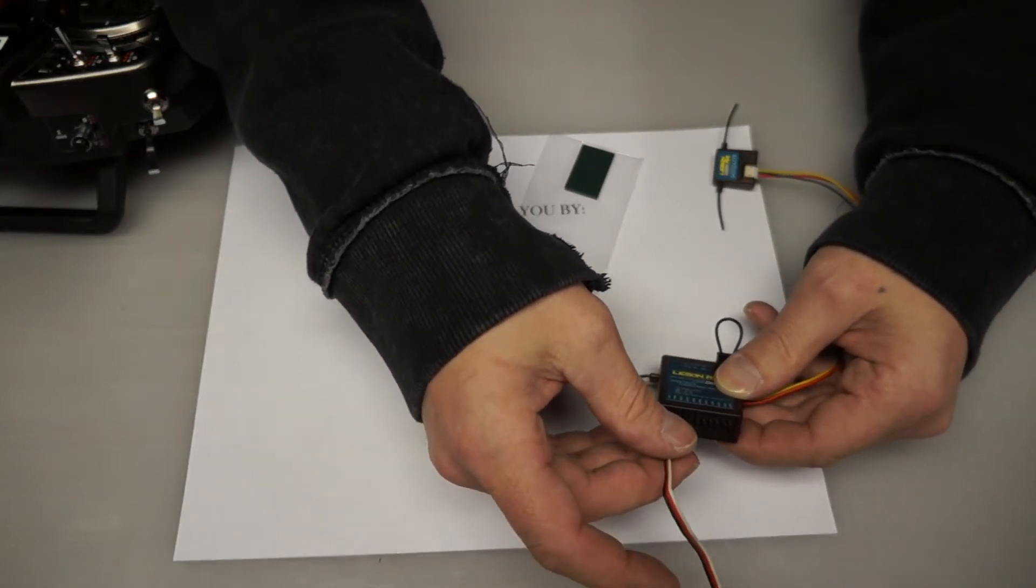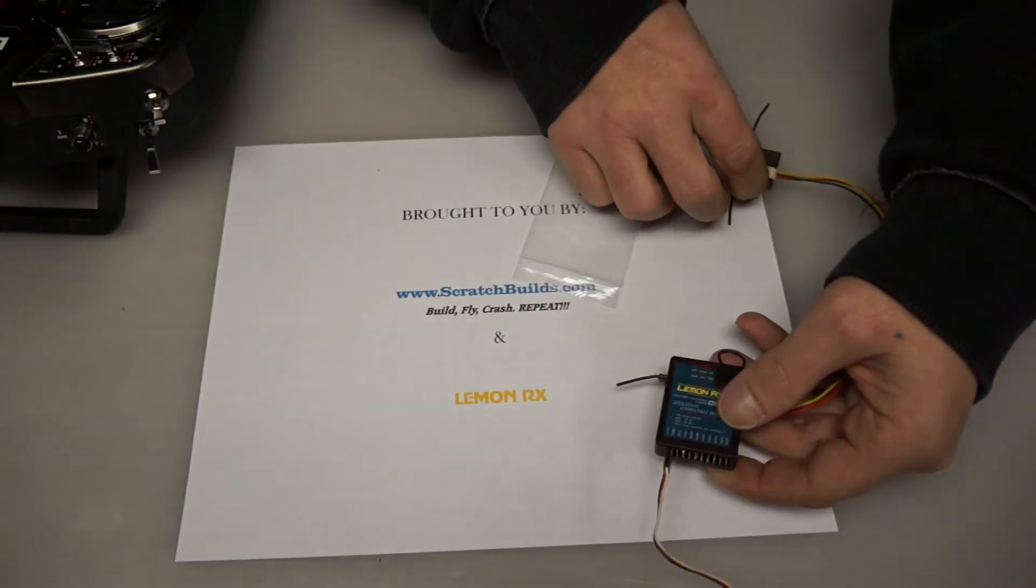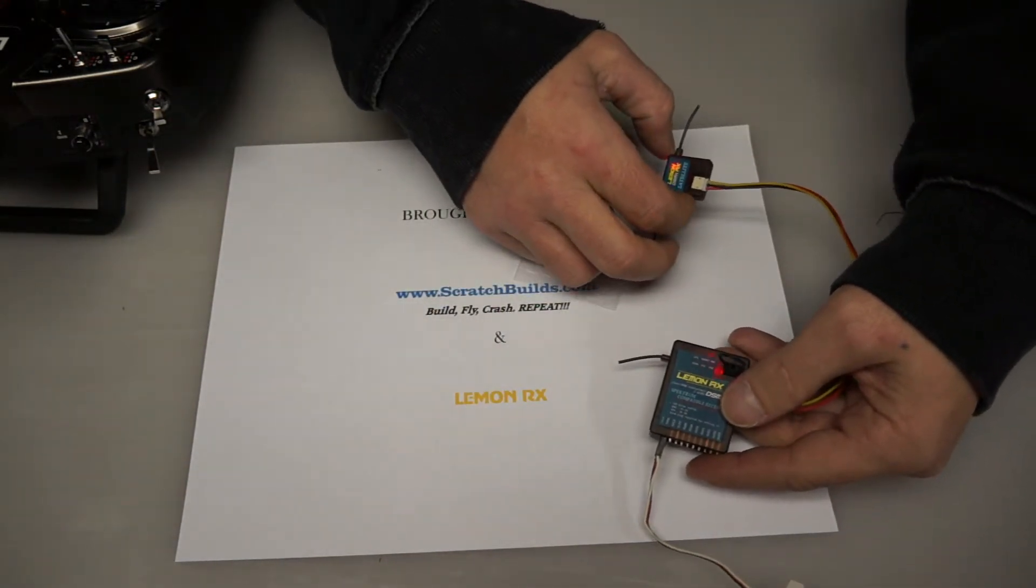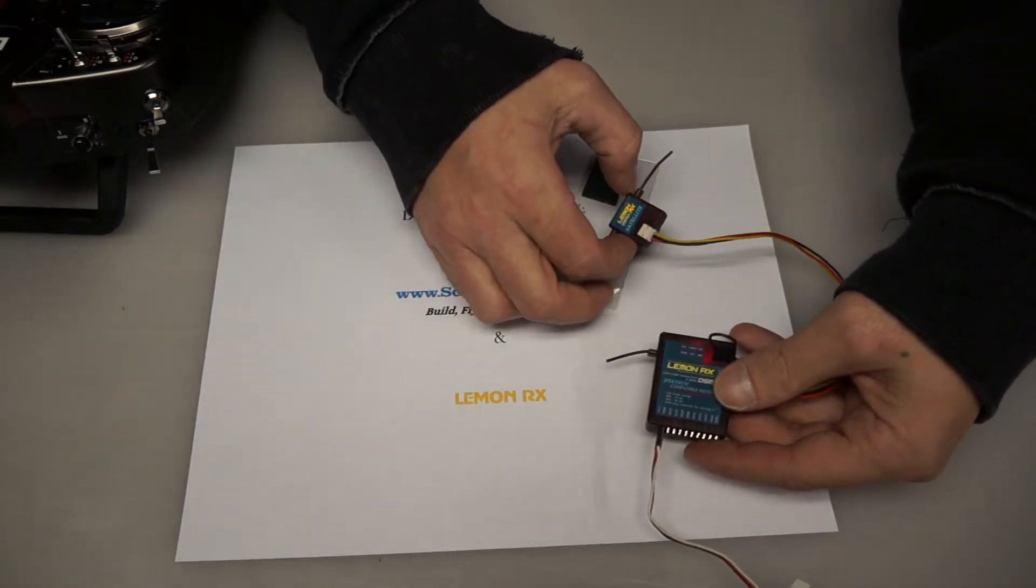So here is the throttle channel and we're going to plug in. And what we are getting are flashing LEDs. And that indicates that the satellite and the receiver are both in bind mode.